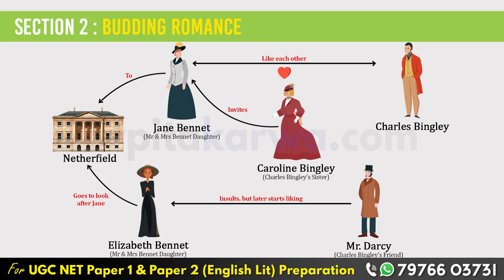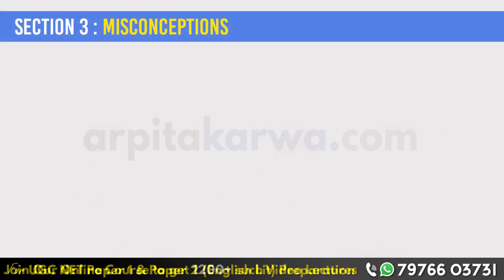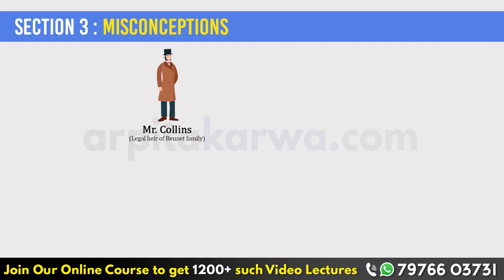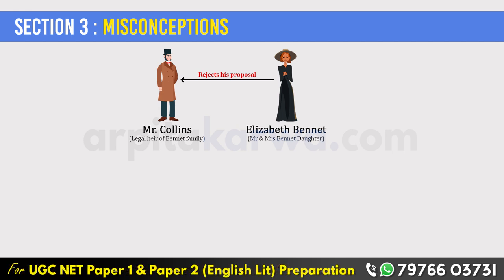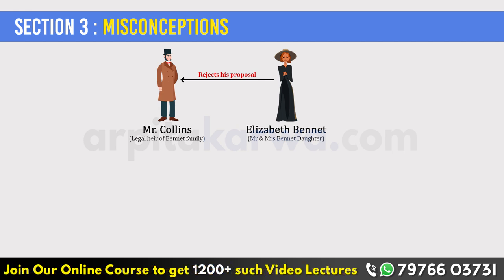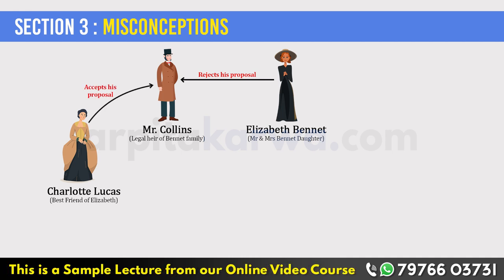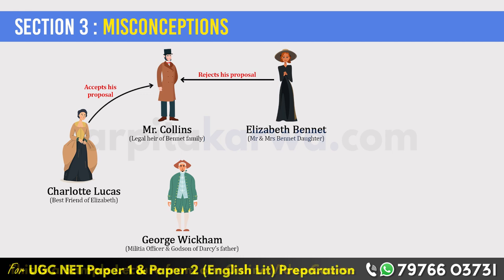The week ends and the two sisters return to Longbourn. At this point, another character enters the story — Mr. Collins, the prospective legal heir of the Bennett family, who has come to their estate to get married to one of the Bennett daughters. He proposes to Elizabeth but she refuses. He tries to convince her by telling her that his patron Lady Catherine de Bourgh has made him a dean and he earns good money, but Elizabeth is stubborn and rejects his proposal. Mr. Collins is very disheartened. However, soon Elizabeth gets to know that he has proposed to her best friend Charlotte Lucas, and she has accepted his proposal. Then we also meet George Wickham, a militia officer and godson of Darcy's late father. He provokes Elizabeth against Mr. Darcy, telling her that he lost his job because of him, and Elizabeth develops feelings for Wickham.